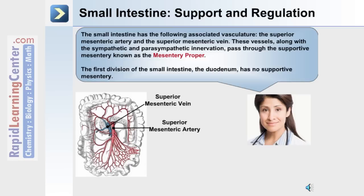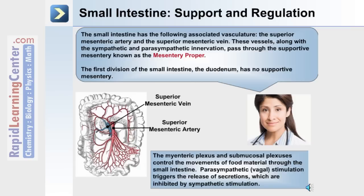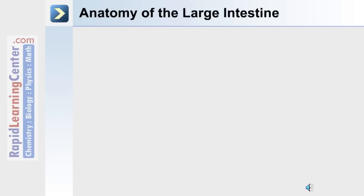The first division of the small intestine, the duodenum, has no supporting mesentery, as it is a very small region. The myenteric plexus and submucosal plexus control the movement of food material through the small intestine. Parasympathetic or vagal stimulation triggers the release of secretions, which are inhibited by sympathetic stimulation to this region.